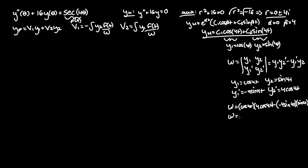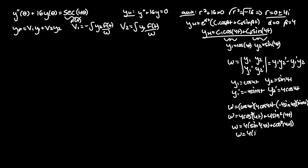Multiplying that out we have 4 cosine squared of 4t plus 4 sine squared of 4t. Using the trig identity sine squared plus cosine squared equals 1, we factor out the 4 to get Wronskian equals 4 times 1, so the Wronskian equals 4.